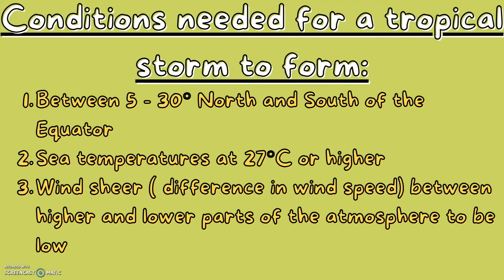Conditions needed for a tropical storm to form. There are three conditions which you must know which tropical storms need to form. First, it must be between 5 and 30 degrees north and south of the equator. Second, the sea temperatures must be at a minimum of 27 degrees Celsius, because heat fuels the storm. And third, the wind shear, which is the difference in wind speed, must be low.